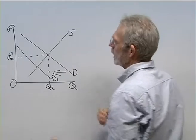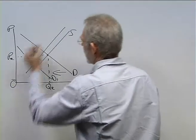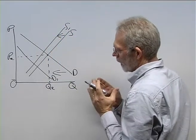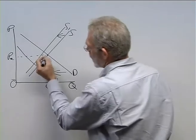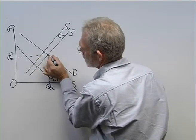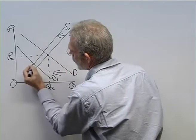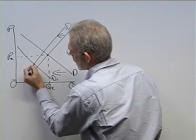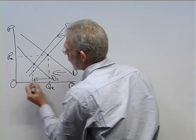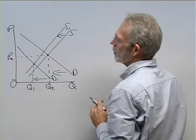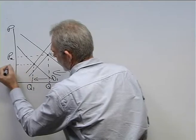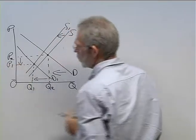At the same time, there is a decrease in supply, say to S1. What will happen? Well, we started here at this equilibrium position and we move to a new equilibrium position at Q1. There is a decrease in equilibrium quantity. In this instance, the price level decreased to P1.